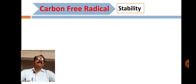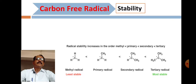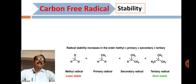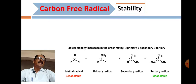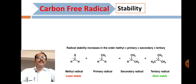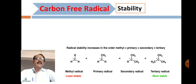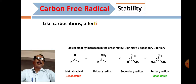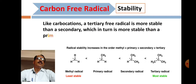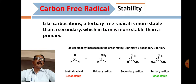Now we will see stability. Methyl radical is least stable, then primary radical, then secondary, and then tertiary. Tertiary radicals are highly stable, whereas methyl radicals are least stable. Like carbocations, a tertiary free radical is more stable than a secondary, which is in turn more stable than a primary.